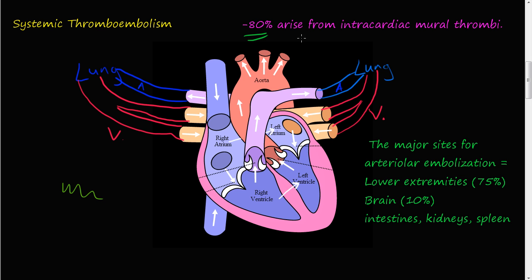80% of these come from intra-cardiac mural thrombi. Mural refers to the walls or to the heart, intra means within, and cardiac obviously refers to the heart. So 80% of these come from blood clots that are inside the heart.